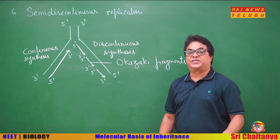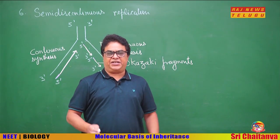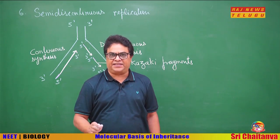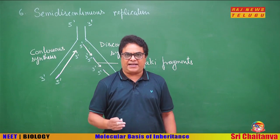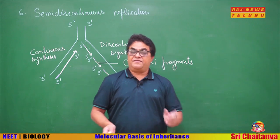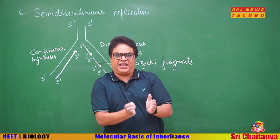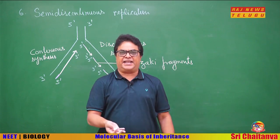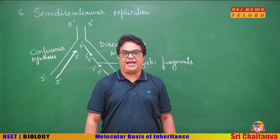In eukaryotes, DNA replication takes place in a specific phase of the cell cycle called S phase, which is part of interphase. In bacteria there is no cell cycle, so replication takes place just prior to binary fission. In eukaryotes, DNA replication and cell division must be highly coordinated — if DNA replication occurs without cell division, it results in a condition called polyploidy.